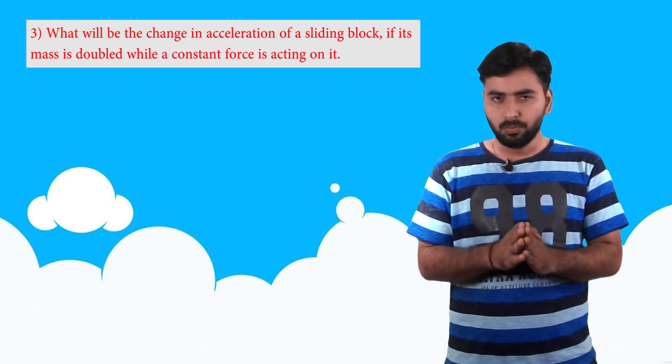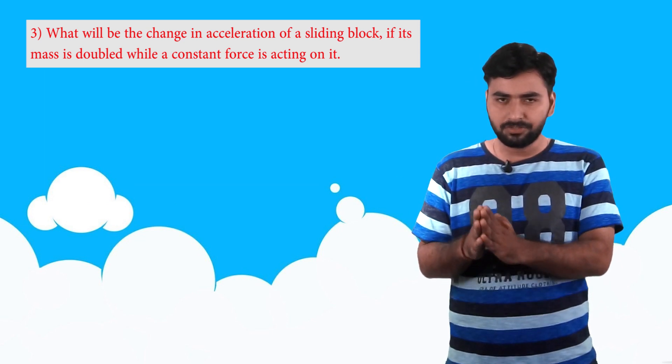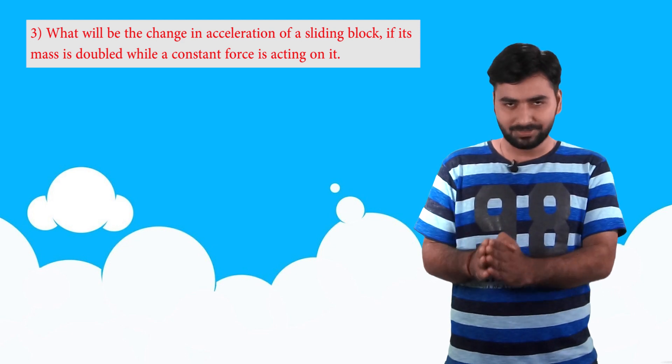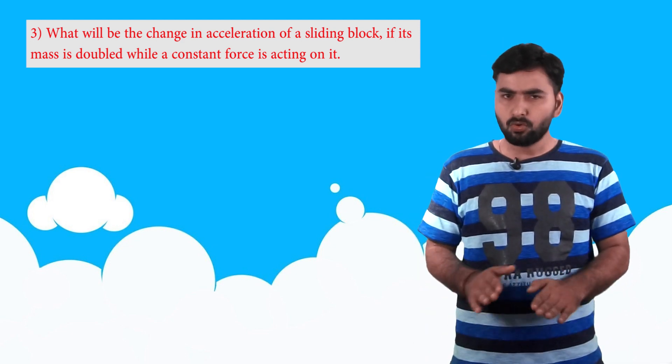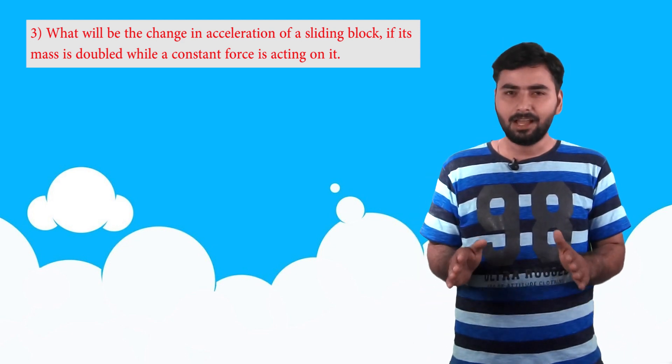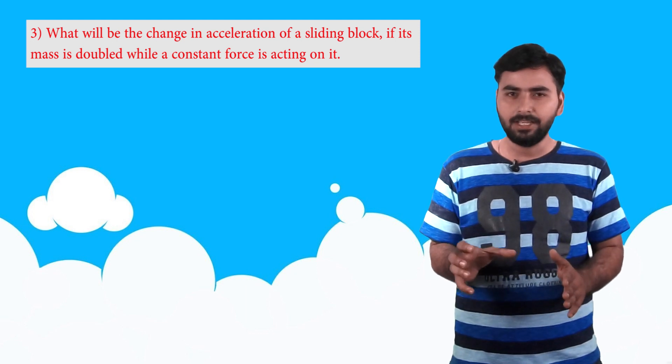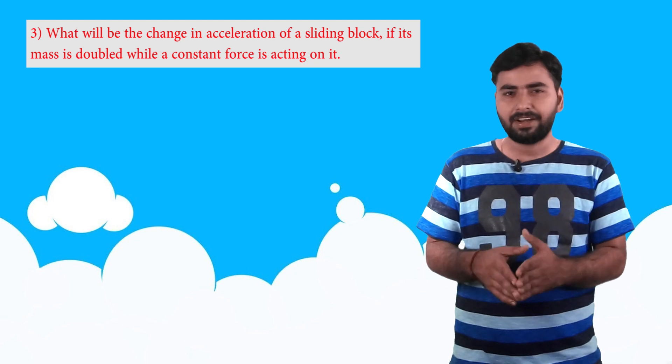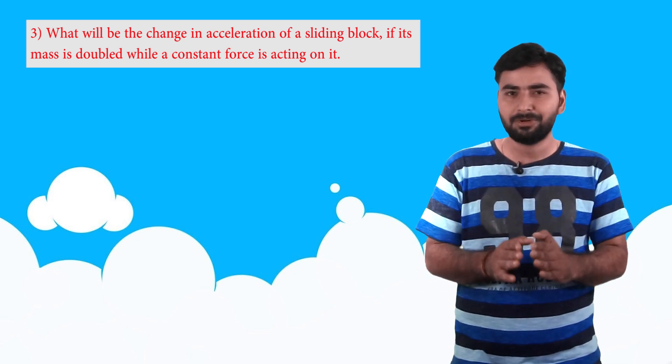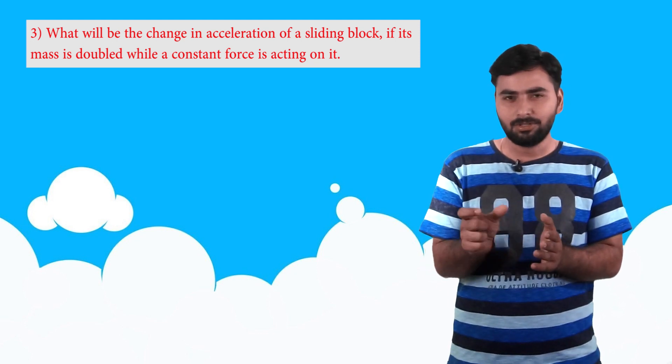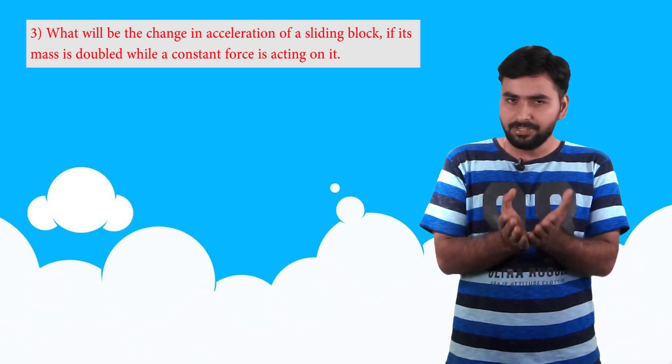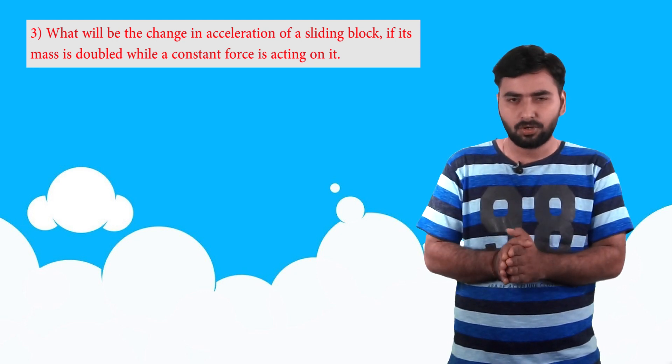And the third question is: What will be the change in acceleration of a sliding block if its mass is doubled while the force is kept constant? In this question we are not given any values. We're just told that there's an object, if its mass is doubled, by what factor will its acceleration change if we keep the force the same? So we can solve this using the basic formula F equal to ma.